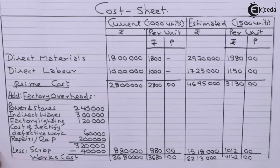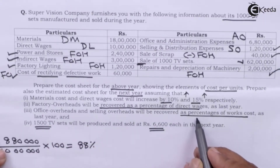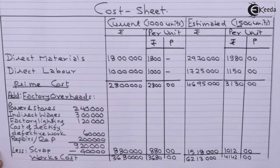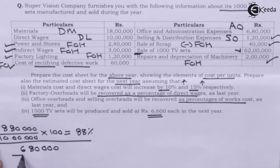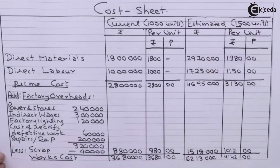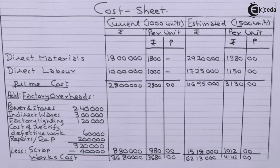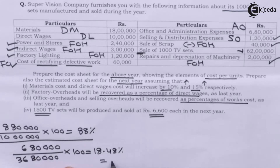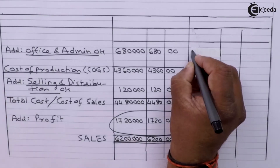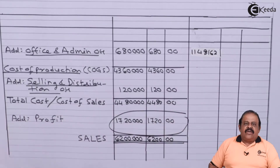To this we are going to add office and administration overheads. Office overheads and selling overheads will be recovered as a percentage of works cost. Last year office overheads were 6 lakh 80,000 and last year works cost was 36 lakh 80,000. So the percentage comes to approximately 18.48%. In the estimated period, works cost is 62 lakh 13,000 — applying the same percentage, it comes to approximately 11 lakh 48,162.